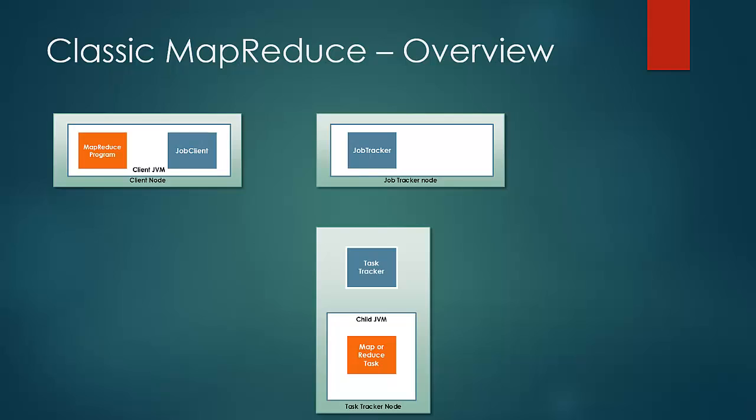So as the first step, job client submits a job to job tracker by placing it in the job tracker's queue. There are many setups and checks done in this phase, like if the output is already present or not, or if the input file exists or not.